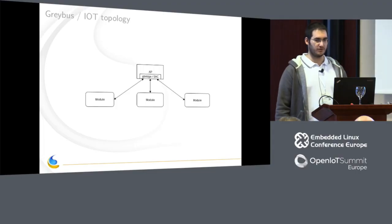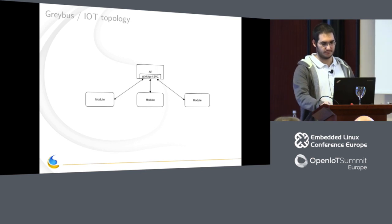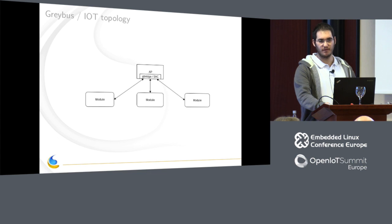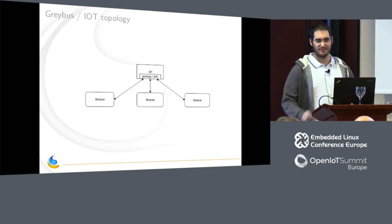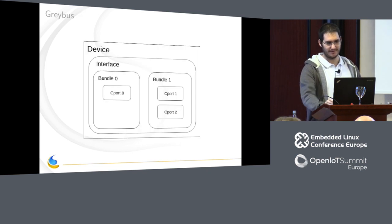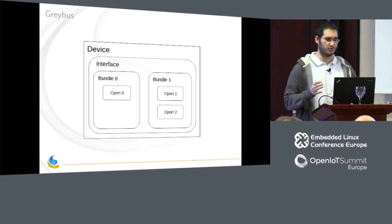I think there are some other protocols used in IoT such as ZigBee. We just need to add another layer for ZigBee, for example, or BLE — I'm working on BLE at this moment. So here is how we describe a Greybus module, a device. First we have the device, and the device may have one or more interfaces.